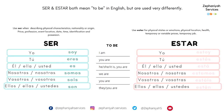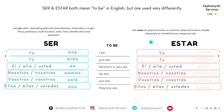Ser and estar both mean the verb 'to be' in English, but they're used very differently. We use ser when describing physical characteristics, nationality or place of origin, price, profession, event location, identification, date, time — you name it. And we use estar for physical states or emotion, physical location, health, temporary or variable prices, and temporary jobs.